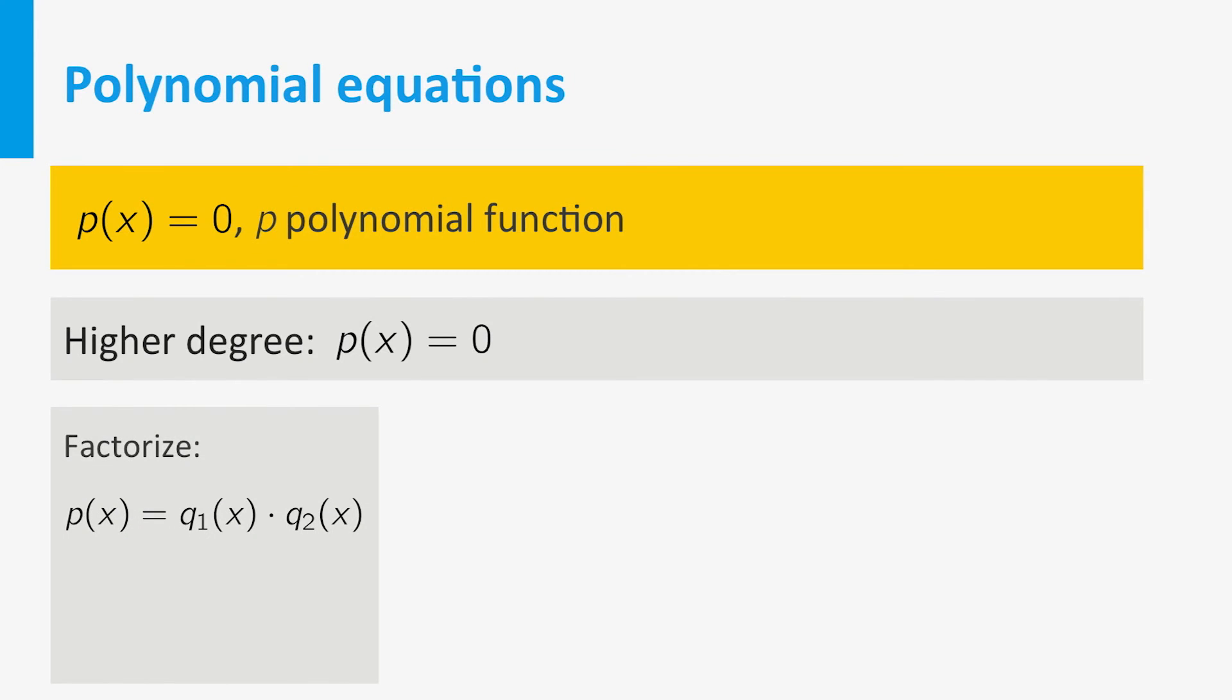If you know of factorization, you can reduce the equation to equations of a lower degree. Sometimes you can guess a solution, x equals a. Then you can write p of x equals x minus a times q of x, where q has degree 1 less than p. Then you try to solve q of x is zero.